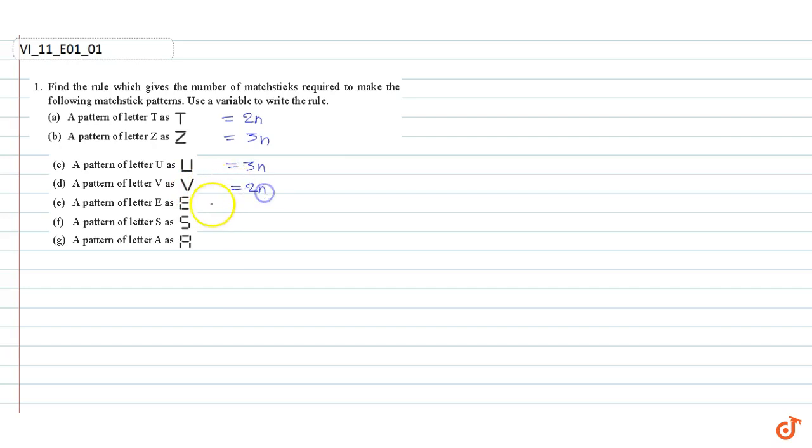It takes five matchsticks to make E, so it is 5n. It takes five matchsticks to make S, so the rule is 5n.